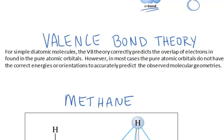Valence bond theory. For simple diatomic molecules, the valence bond theory correctly predicts the overlap of electrons found in the pure atomic orbitals. However, in most cases, the pure atomic orbitals do not have the correct energies or orientations to accurately predict the observed molecular geometries.